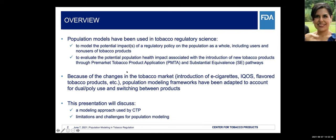As an overview, population modeling has been used in tobacco regulatory science for multiple purposes. I will highlight two purposes here. The first one was to model the potential impacts of potential regulatory policy on the population as a whole, including users and non-users of tobacco products.